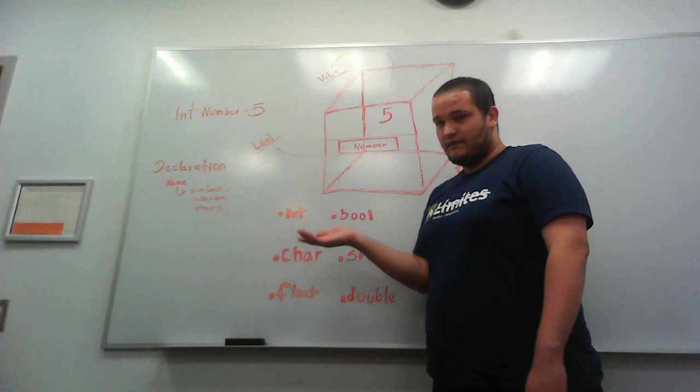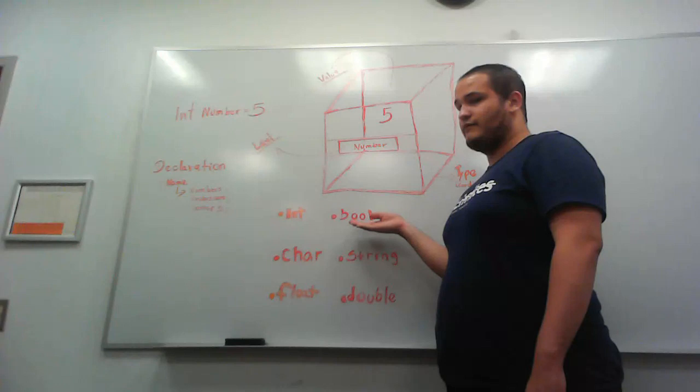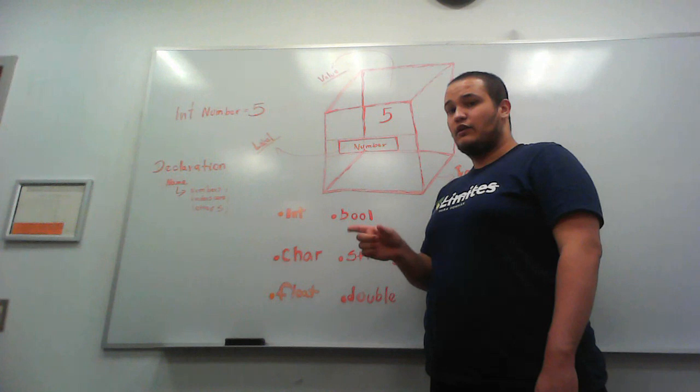So in C++ programming, we have different types of variables. We have integer variables that hold integer numbers, we have boolean variables that hold true or false values.